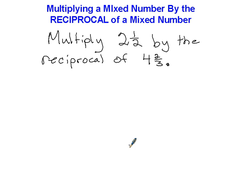The first thing I want you to do is change these two mixed numbers — that's a whole number and a fraction — into improper fractions by doing times and plus.